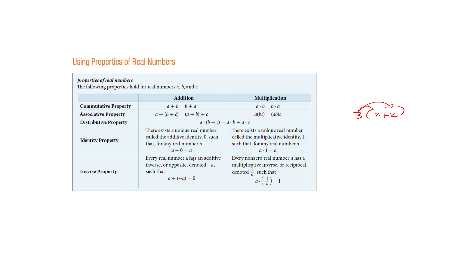The identity property is: what can you add to a number to keep it the same? You can keep it the same by adding zero. And for multiplication, you can multiply by one. The inverse property is what we can do to make a number turn into zero — in addition, if I add a number to its opposite, I get zero. In multiplication, the inverse property refers to: if I do a times the reciprocal of that same number, I always get one.